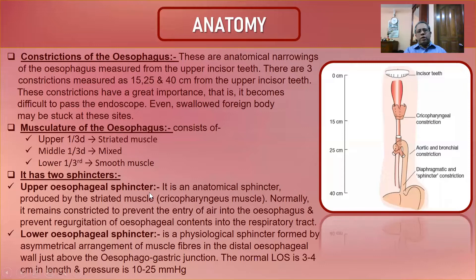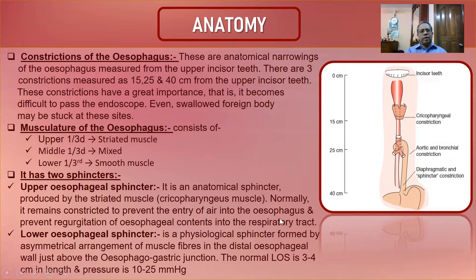The esophagus has two sphincters. The upper esophageal sphincter is an anatomical sphincter formed by the cricopharyngeal muscle — a striated muscle. It plays an important role: normally it remains constricted to prevent air entry into the esophagus and to prevent regurgitation of esophageal contents into the larynx, allowing us to swallow and breathe normally.